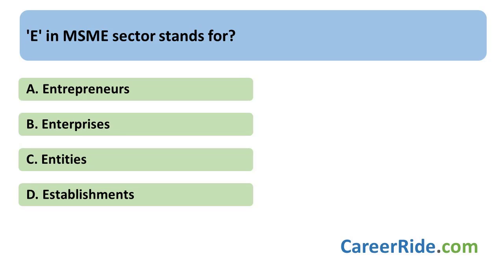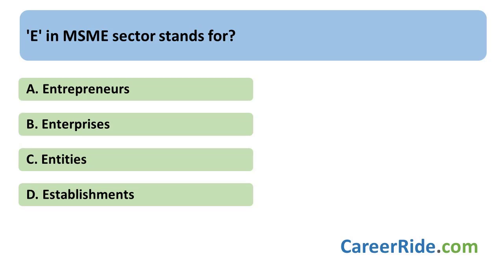The next question: 'E' in MSME stands for — MSME stands for Micro, Small and Medium Enterprises. So the answer is Enterprises. Under the MSME Development Act of 2006, a micro enterprise is one where investment in plant, machinery, and services does not exceed Rs. 25 lakh. In a small enterprise, the investment lies more than Rs. 25 lakh but less than Rs. 5 crore.